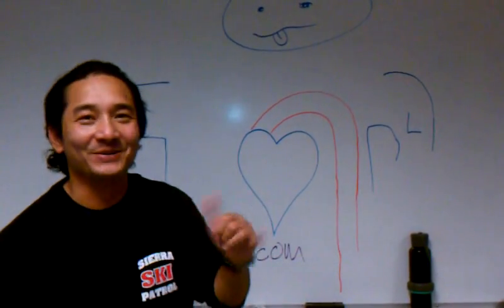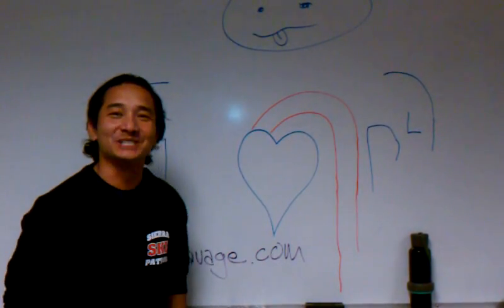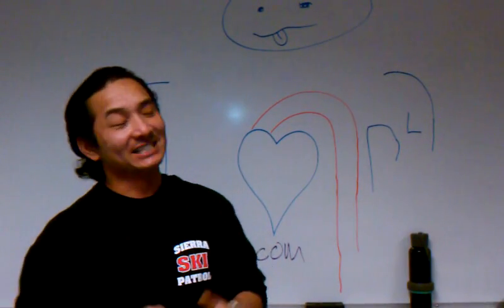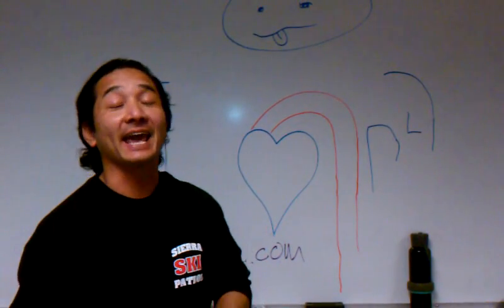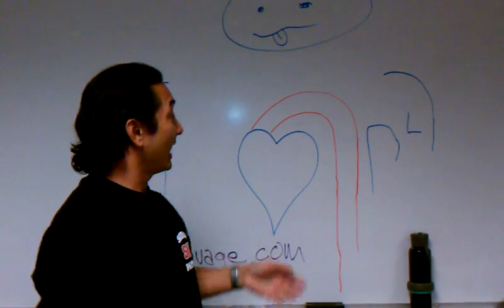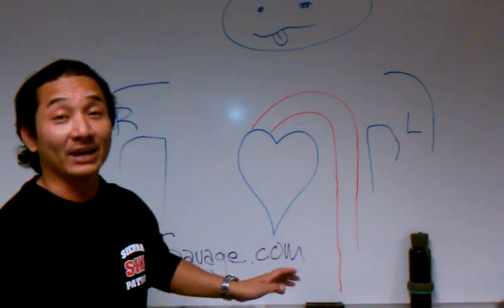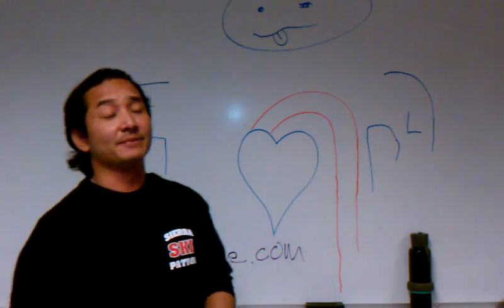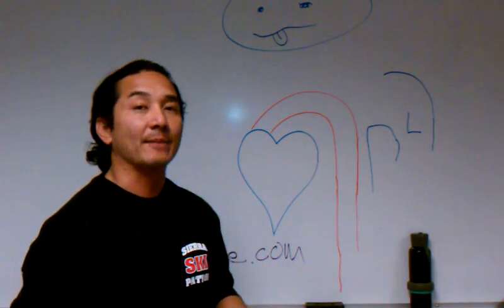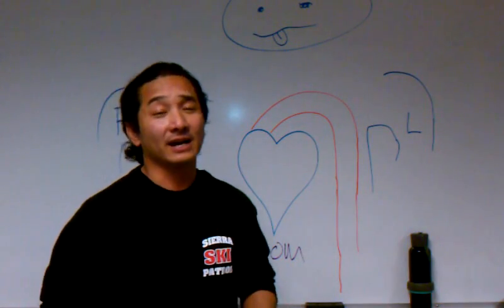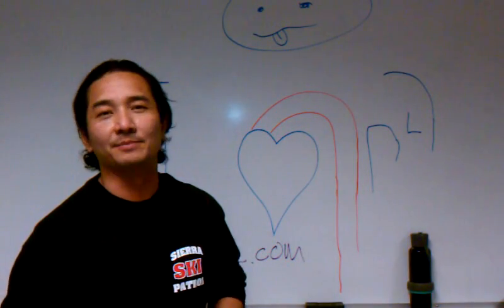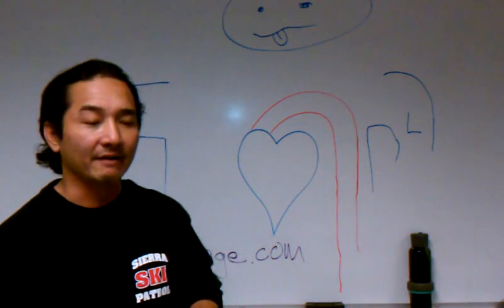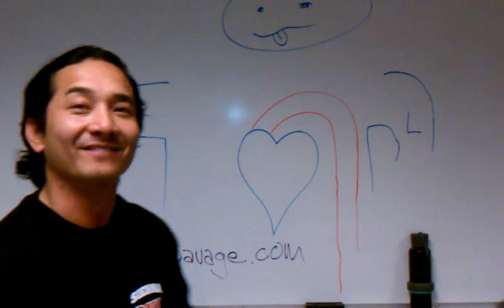Hi, this is Jay Goswiko with Sierra Tahoe Ski Patrol and RozSavage.com. In this episode, I'm going to tell you the difference between an aortic dissection and an abdominal aortic aneurysm. In one of my earlier episodes, I basically explained why one happens and the other, and I got a couple of comments that wanted me to explain it in a little bit more detail and focus in on it, so here you go.